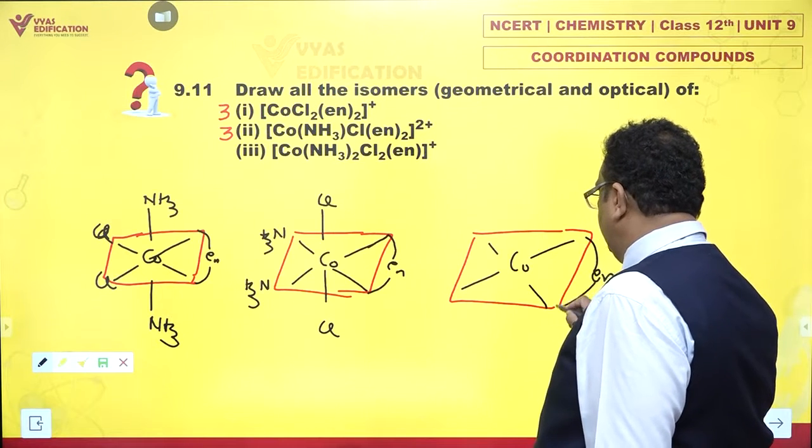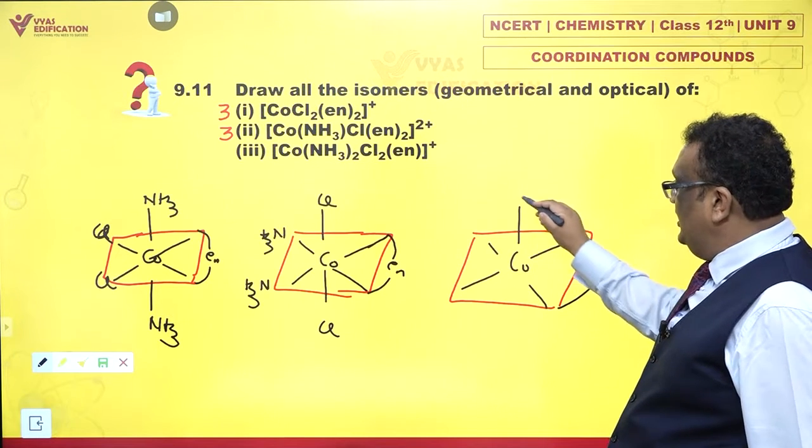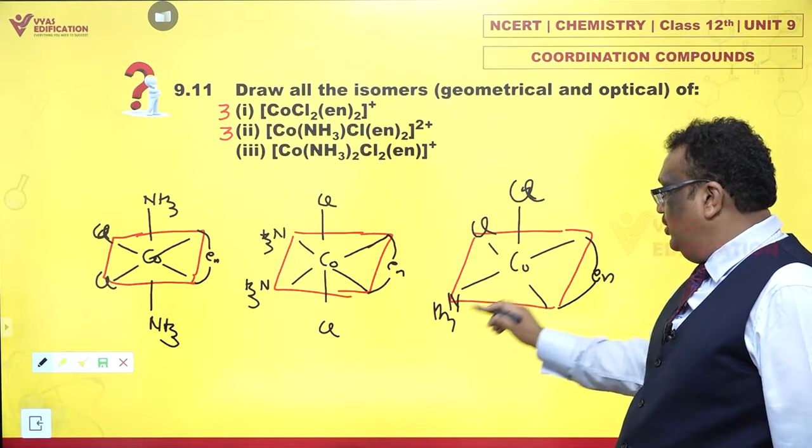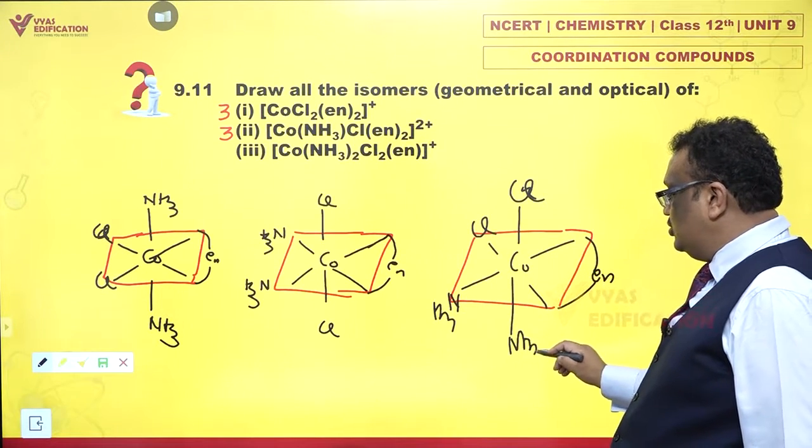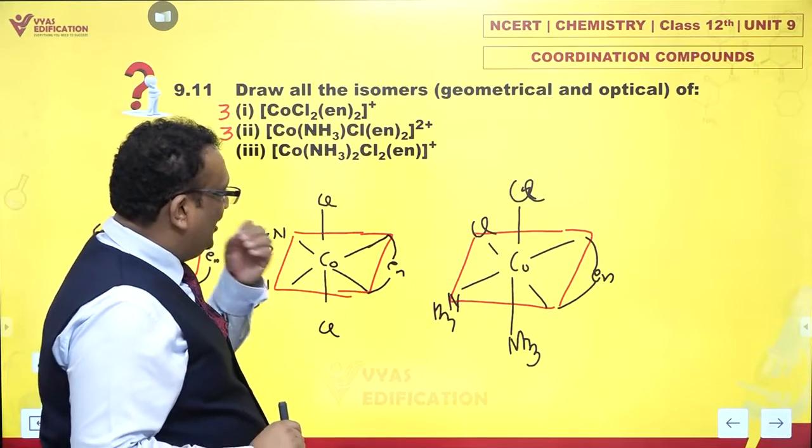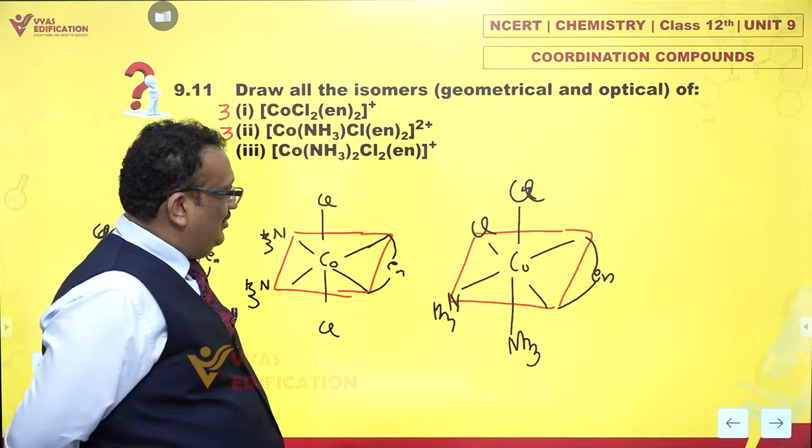But could I have everything cis? Let me try. If Cl and Cl are cis to each other and ammonia and the other ammonia are also cis to each other, is that possible? Yes, that is very much possible.